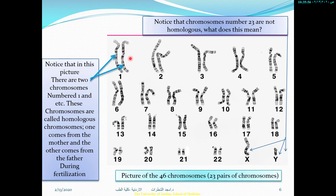How do we know that this is chromosome number one? Chromosome number one is said to be the longest one. Number two is shorter than number one, and number three is shorter still, and so on. We classify chromosomes according to their length.